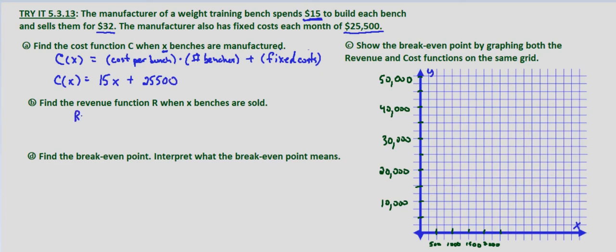With the revenue function, again defined as R of X, we're looking at the selling price per bench times the number of benches. Our selling price given in the problem is $32, so R of X equals $32 times the number of benches which is X. So $32X.